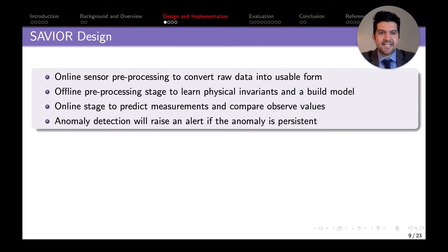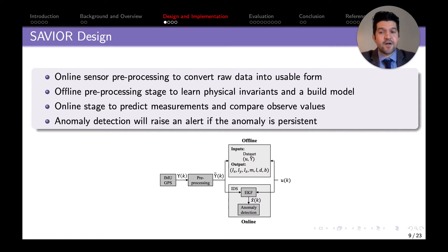The design of our SAVIER algorithm consists of mainly four parts. Number one, we have an online sensor preprocessing because the information from sensors needs to be changed into a more readable form. We have an offline preprocessing stage where we use the models to learn the physical invariants of the system. We have an online stage where we predict measurements and compare observed values to ensure we're not being attacked. And we have an anomaly detection system that raises an alarm if an anomaly is persistent in the system.